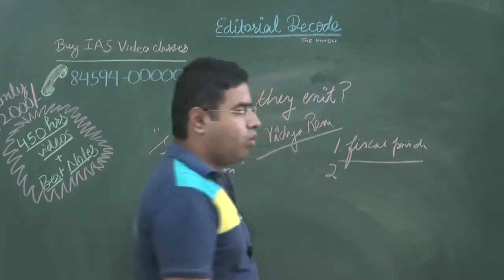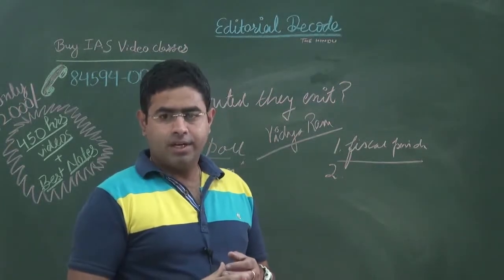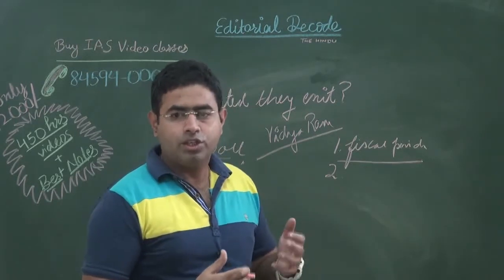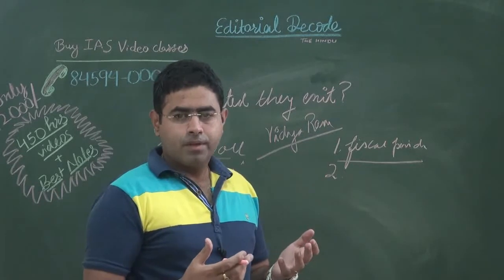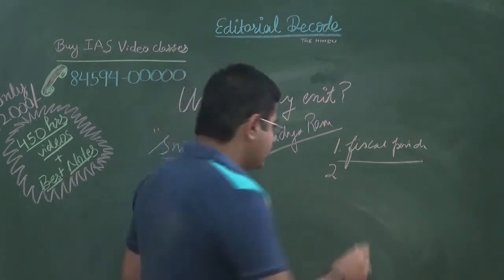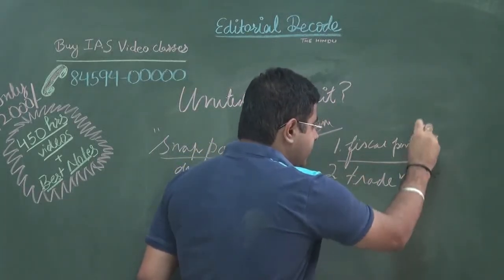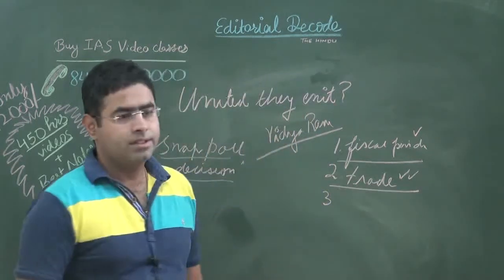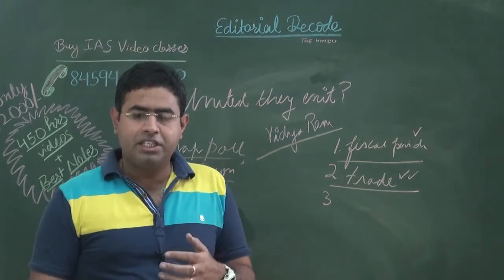The second reason was that Britain was feeling constrained in terms of the policies and programs it wanted to unleash in the domain of trade and in the domain of finance. Britain felt significant constraint in its trade policy.